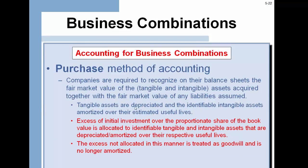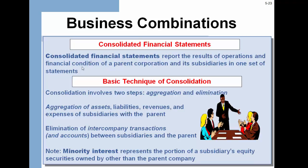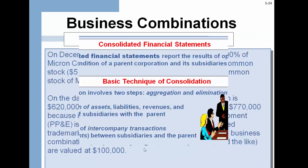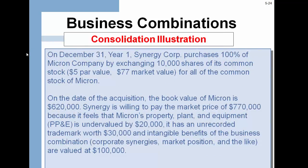With business combinations, you use the purchase method, which takes the assets from the acquired business at fair market value and compares them to what you paid for the tangible assets. Any difference goes into an account called goodwill. You then produce consolidated financial statements through aggregation and elimination — aggregating assets, revenues, and everything else — and you account for minority interest.